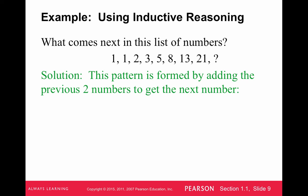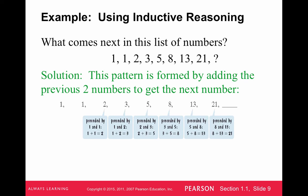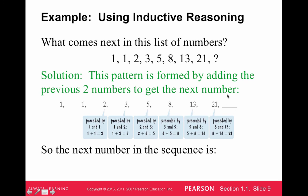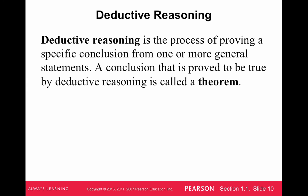This one is a little bit more tricky. It's a pattern where the next number after the first two numbers is the sum of the previous two: two is the sum of the previous two, three is the sum of one and two, and five is the sum of two and three. So the next number should be the sum of 21 and 13, which is 34. Deductive reasoning is the opposite — it is the process of proving a specific conclusion from one or more general statements. A conclusion proved true by deductive reasoning is called a theorem.